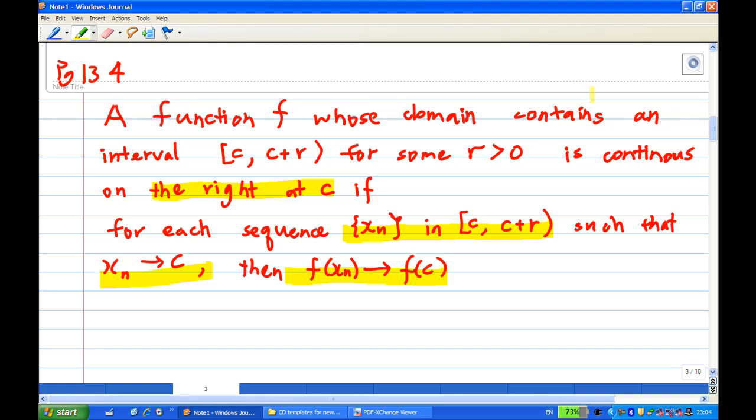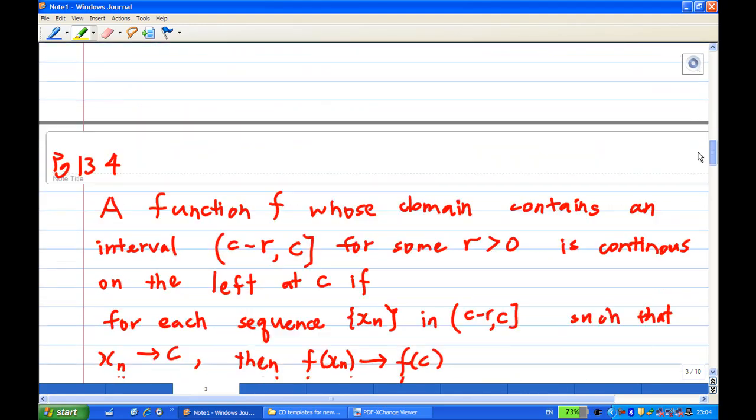So, you must have an interval containing c, and this interval is on the right, it is open interval on the right of c there. And the xn must be chosen. Any sequence converges to c inside this interval, and f of xn converges to f of c.